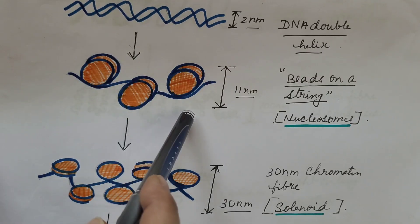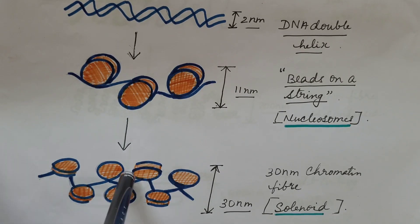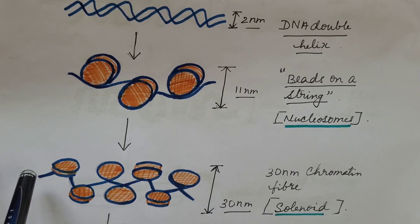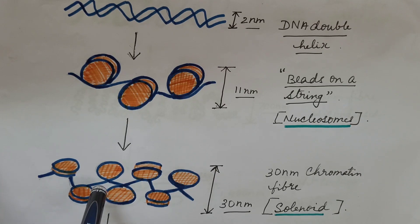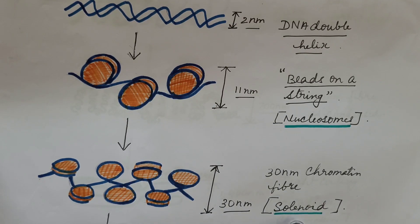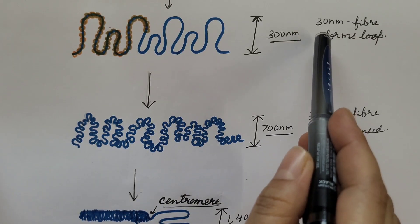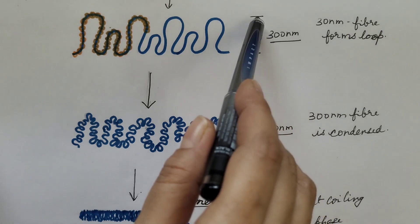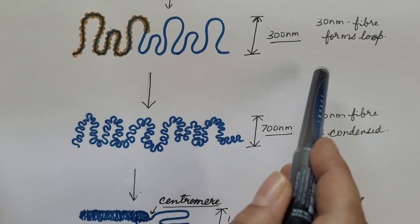The beads-on-a-string structure then coils helically, giving a width of 30 nanometers, where each turn of the helix consists of 6 nucleosomes. These are known as the 30-nanometer fiber, also known as solenoid fiber. In the next level, this 30-nanometer fiber forms loops which have a width of 300 nanometers.